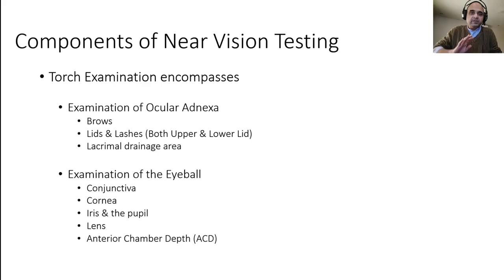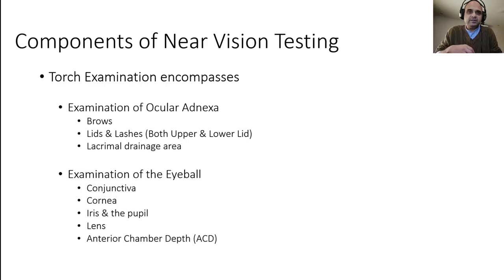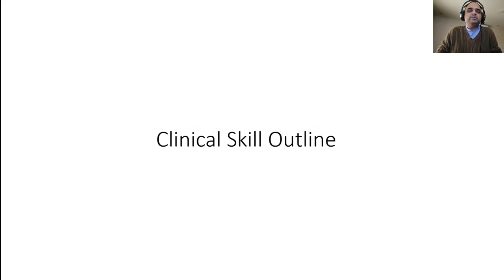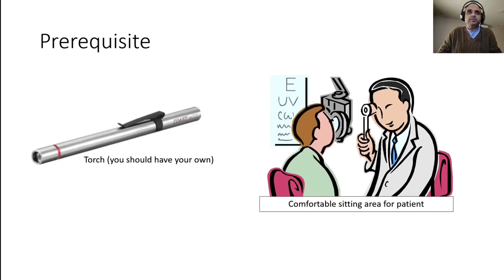We are not doing pupillary reflexes right now — that is a different skill — but you can at least observe the pupil and through the pupil the lens, and finally assess the anterior chamber depth. Anterior chamber depth becomes important when we cover the red eye. This examination follows the same seven components true for any clinical skill, not only in ophthalmology but everywhere else.